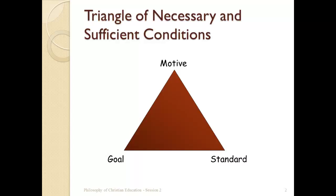These three aspects — motive, goal, and standard — are all related to one another. They're perspectives on one another. If our motive is to love God, that implies a particular standard: obedience. Jesus said, 'If you love me, keep my commandments.' The motive leads to a standard. We're not truly loving God if we're not obeying God. And likewise, a motive implies particular goals. If we love God, we should desire to see his kingdom advanced.